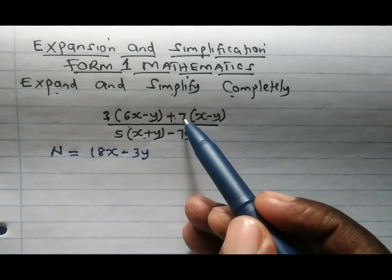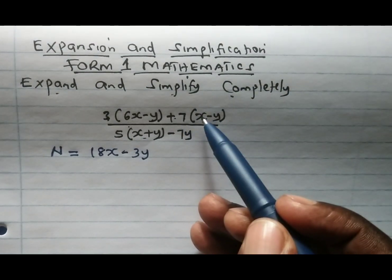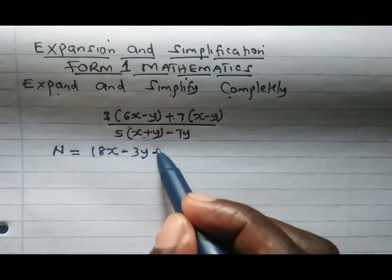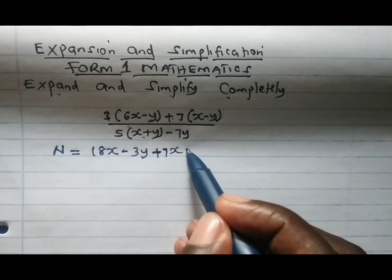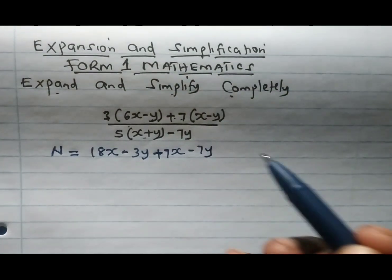Then we come to the other bracket. 7 times x gives positive 7x, and 7 times minus y gives minus 7y.